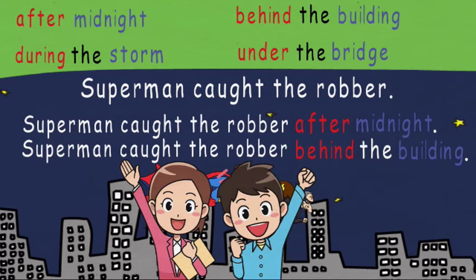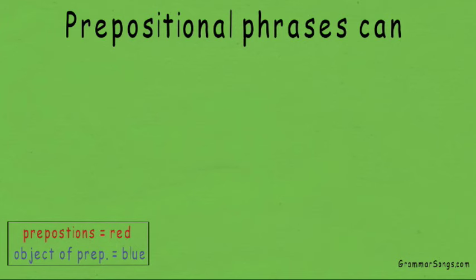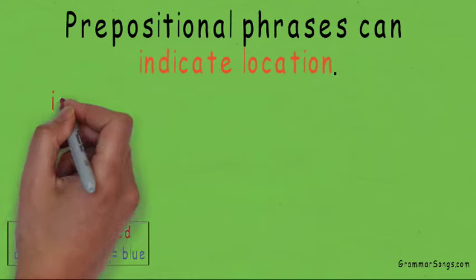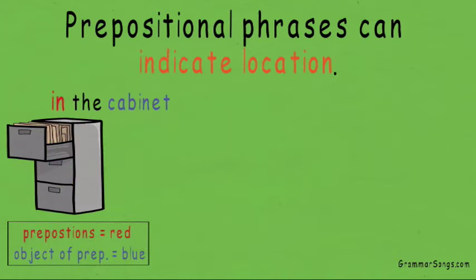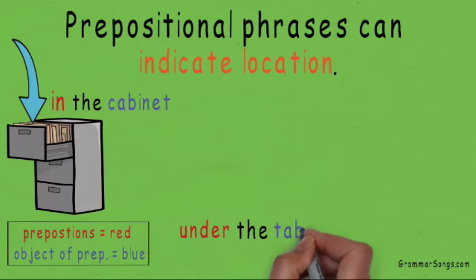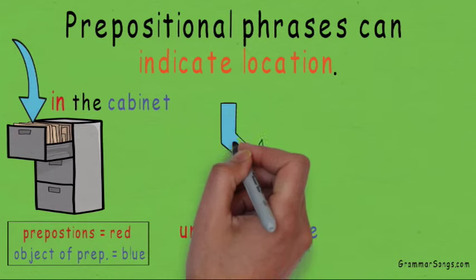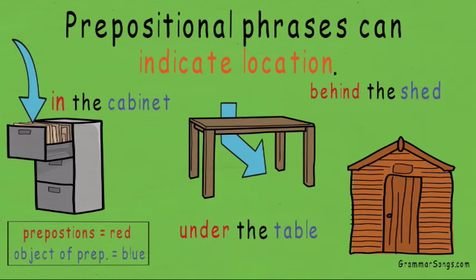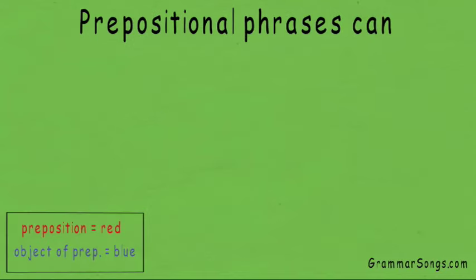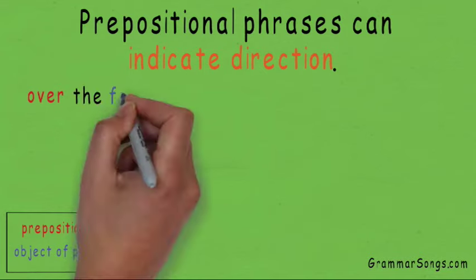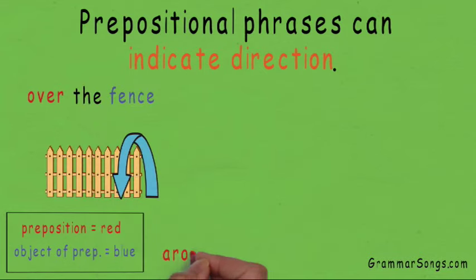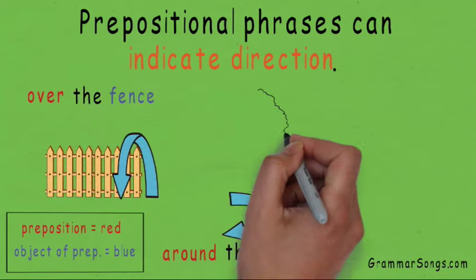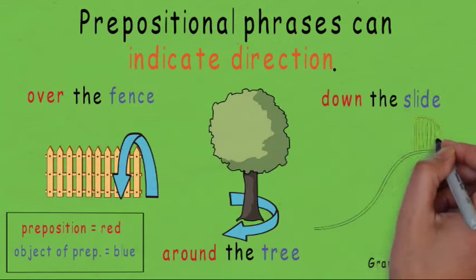Prepositional phrases can indicate location — in the cabinet, under the table, or behind the shed. Prepositional phrases can indicate direction, such as over the fence, around the tree, and down the slide.